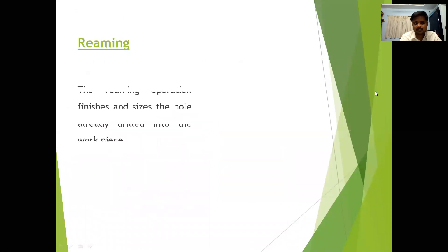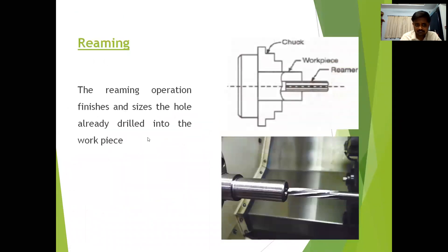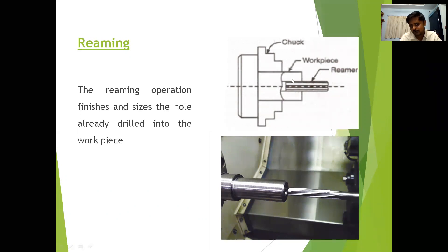Next is reaming. Reaming is called the finishing operation — you can finish the holes which are already drilled by the drilling operation in the workpiece. Just like the drill bit, we fix the reamer in the tailstock. The workpiece is held in a chuck and is going to be rotating, and we move the reamer towards the rotating workpiece.